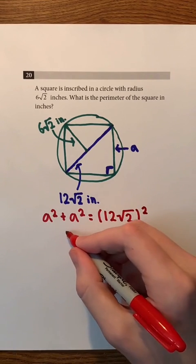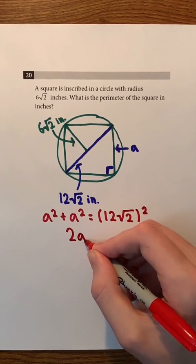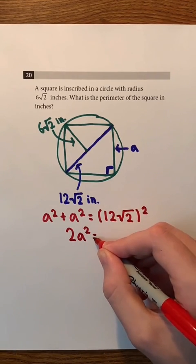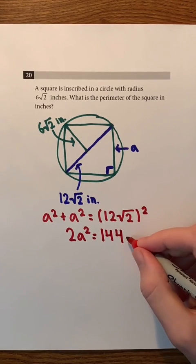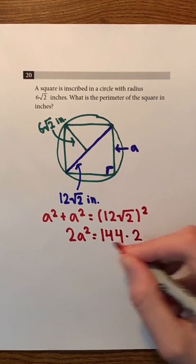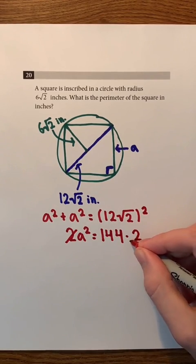Now, let's solve for A. First, let's rewrite A squared plus A squared as 2A squared. 12 squared is 144, and the square root of 2 squared is just 2. The 2's on both sides of the equation cancel each other out.